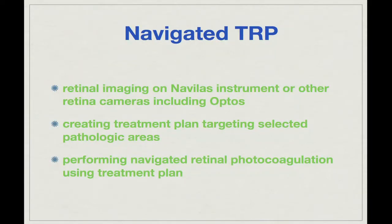What is the principle of navigated TRP? The few reports I mentioned used standard conventional laser to ablate peripheral non-perfusion, but using navigated technology we can image-guide our treatments. We perform wide-angle fluorescein angiograms or fundus photos, delineate the pathologic areas, and create a treatment plan selectively targeting these areas — which is very difficult, close to impossible, to do precisely with standard conventional laser. Once we create this treatment plan, we perform treatment with an overlay of the live retina image.